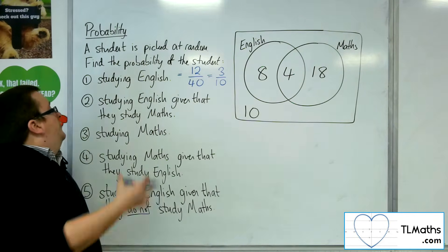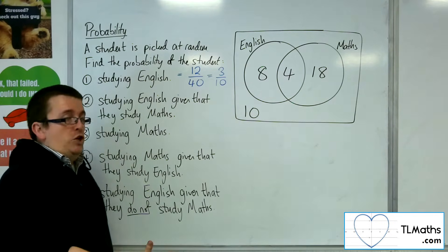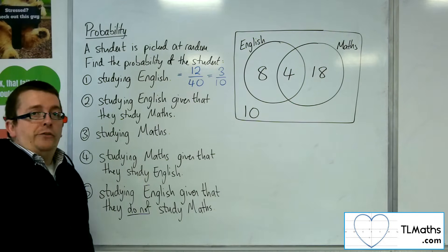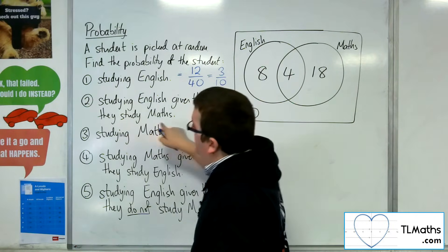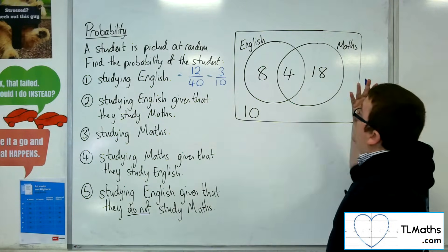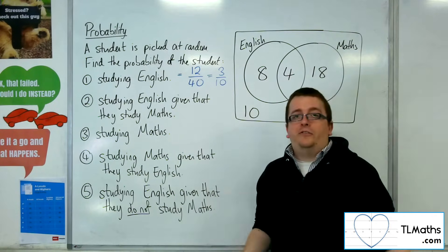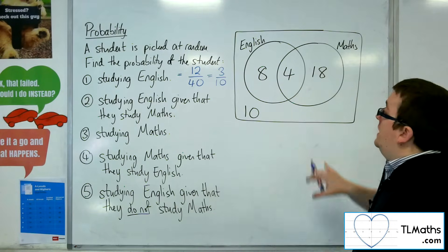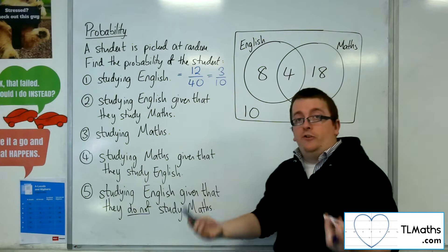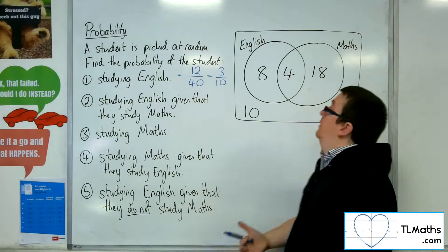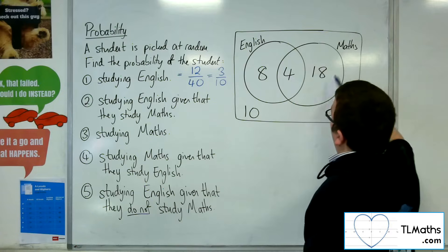If we're looking at studying English given that they study maths, then we have this extra bit of information — we know already that they study maths. Given that they study maths, we already know they are one of those 22 students that are studying maths. We're not considering anybody else. So out of those 22 students, what's the probability of choosing someone who studies English? There are 4 students in English out of the 22.